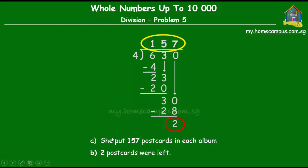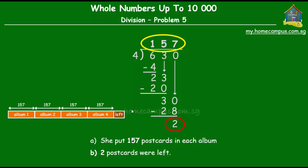Now sometimes people can make mistakes while doing divisions, so it's best to check your answer by carrying out the steps backwards. I'll show you what I mean. We bring up our model diagram. Now we know that there are 157 postcards in each album, which is the quotient of the division, and there are 2 postcards that are left. That's the remainder from the division that we did just now.